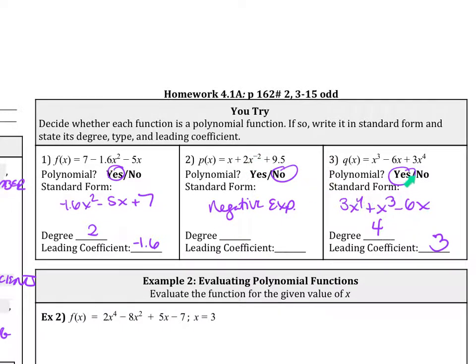Number 3, this is a polynomial function. You need to rewrite it as 3x to the 4th plus x cubed minus 6x. Degree is 4. Leading coefficient is 3.